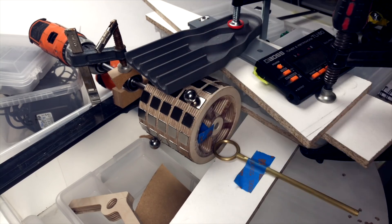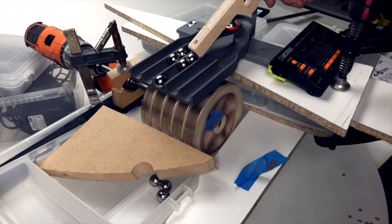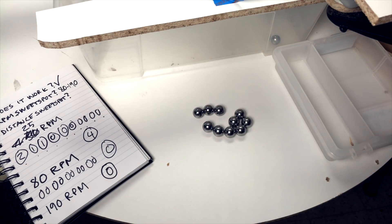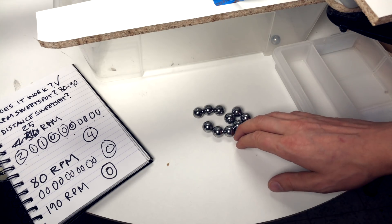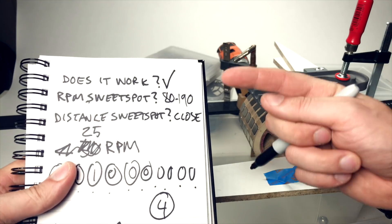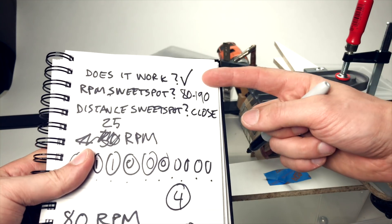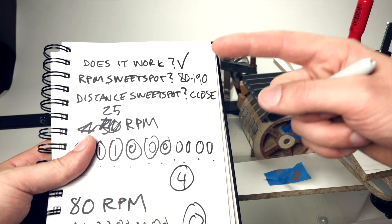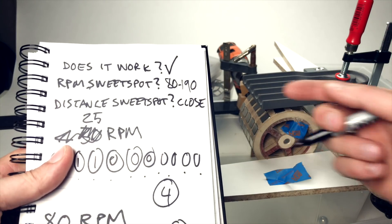Empirical research, everyone! That tells you kind of clearly that more distance is worse. So I'm happy with the three answers we have. It does work. RPM sweet spot is between 80 and 190. And the distance sweet spot is as close as possible.